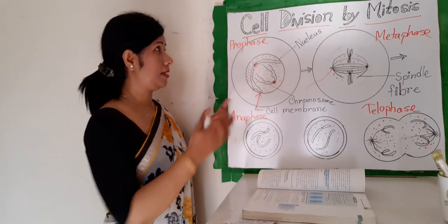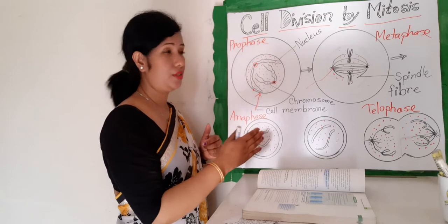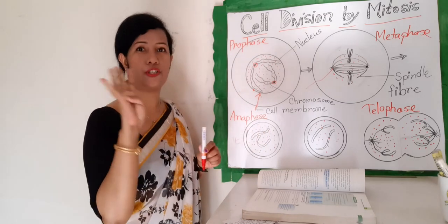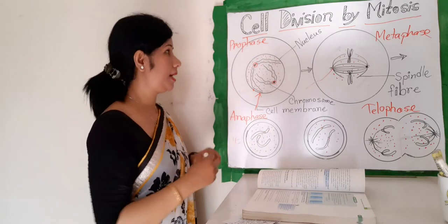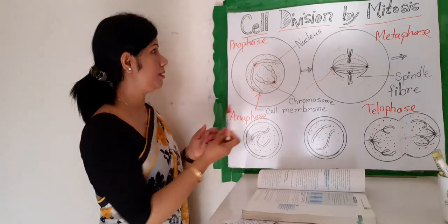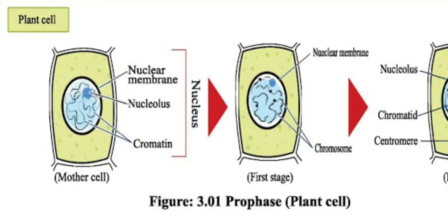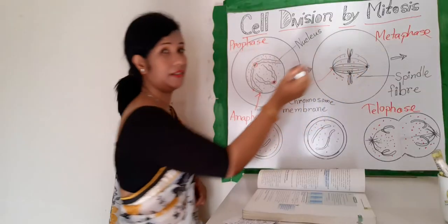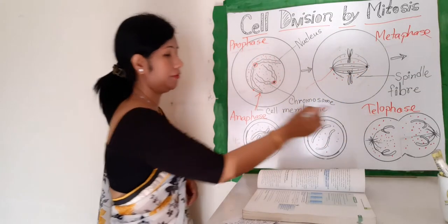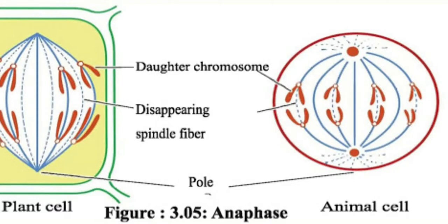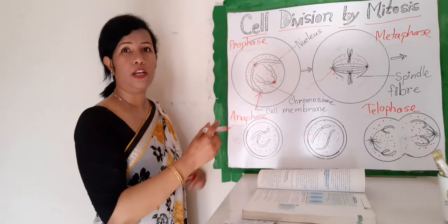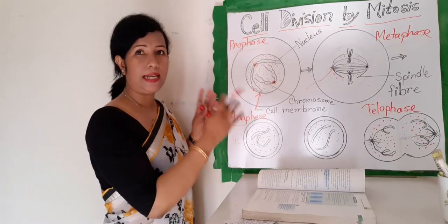Cell division by mitosis has four stages. Number one is prophase, number two is metaphase, number three is telophase, and the last is anaphase. First, I'm starting with prophase.